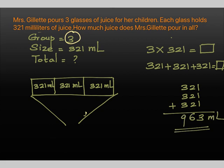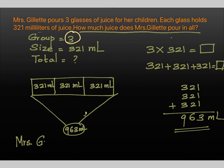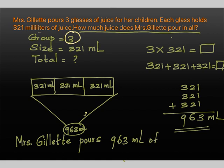So the total is 963 milliliters. How much juice does Mrs. Gillette pour in all? The statement will be: Mrs. Gillette pours 963 milliliters of juice in all.